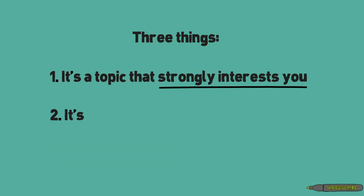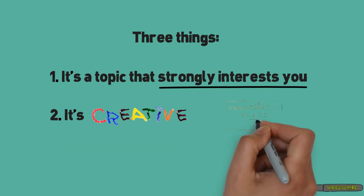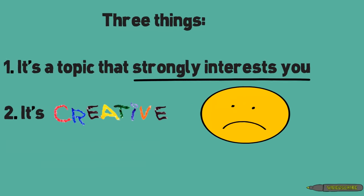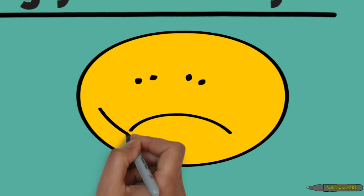Second, make sure your topic is creative. There are some topics that have just been written about over and over again. Can you come up with a topic that perhaps hasn't been covered that much? Try to pick something that is creative and exciting to you and your peers. Writing about Shakespeare's dramas is great, but that topic has been covered extensively. So try to find something a little more creative than that.